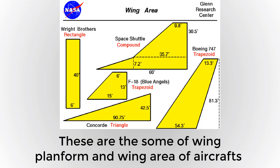First, we are going to see about wing area. It is denoted by the letter A. It is the projected area of the planform and it is bounded by the leading, trailing, and wing tips. The planform is nothing but the shape of the wing when you look from the top of it. These are some of the wing planforms and wing areas of aircraft.